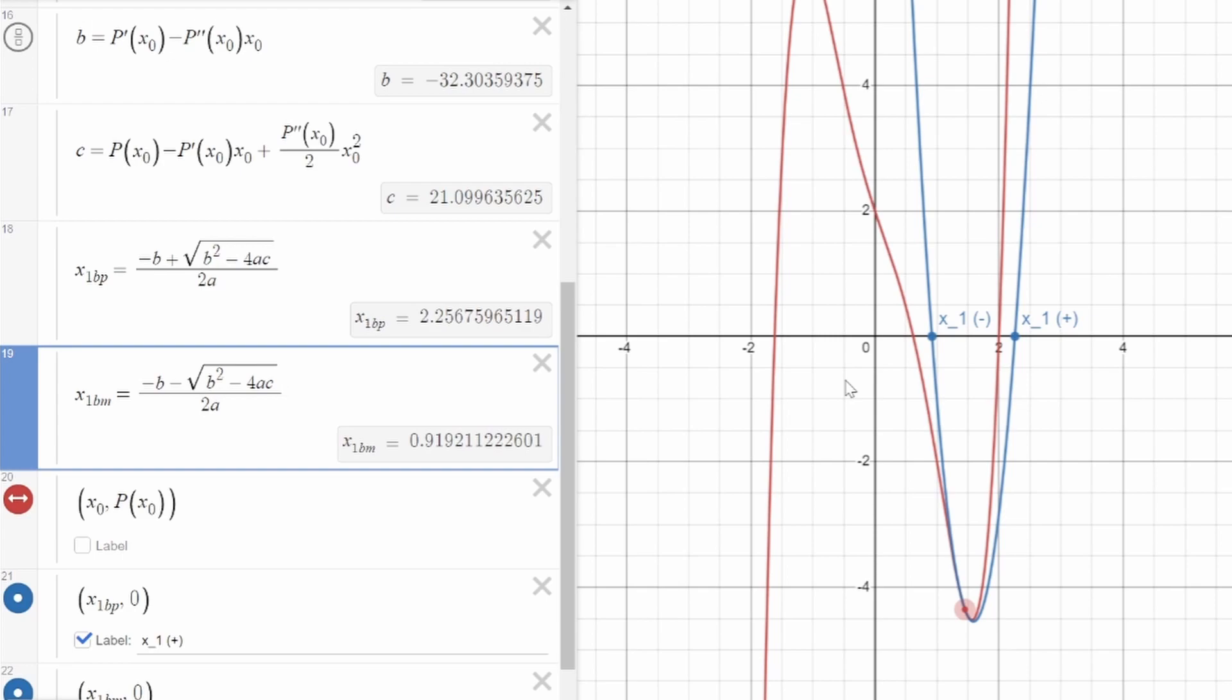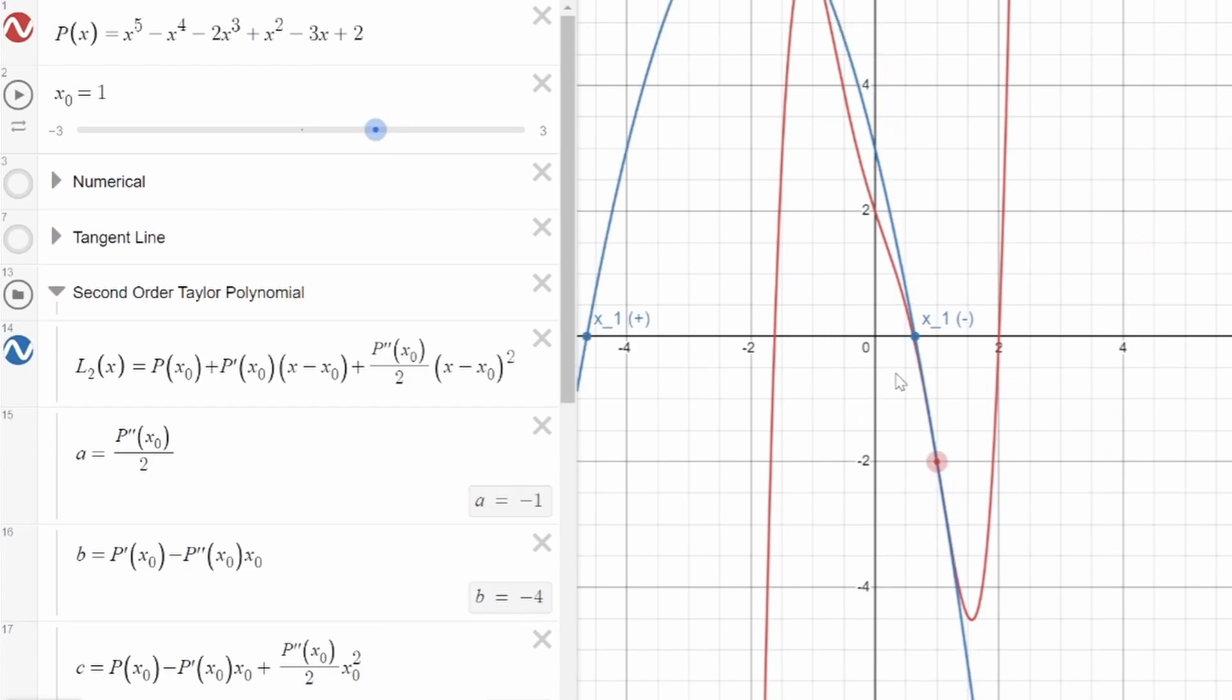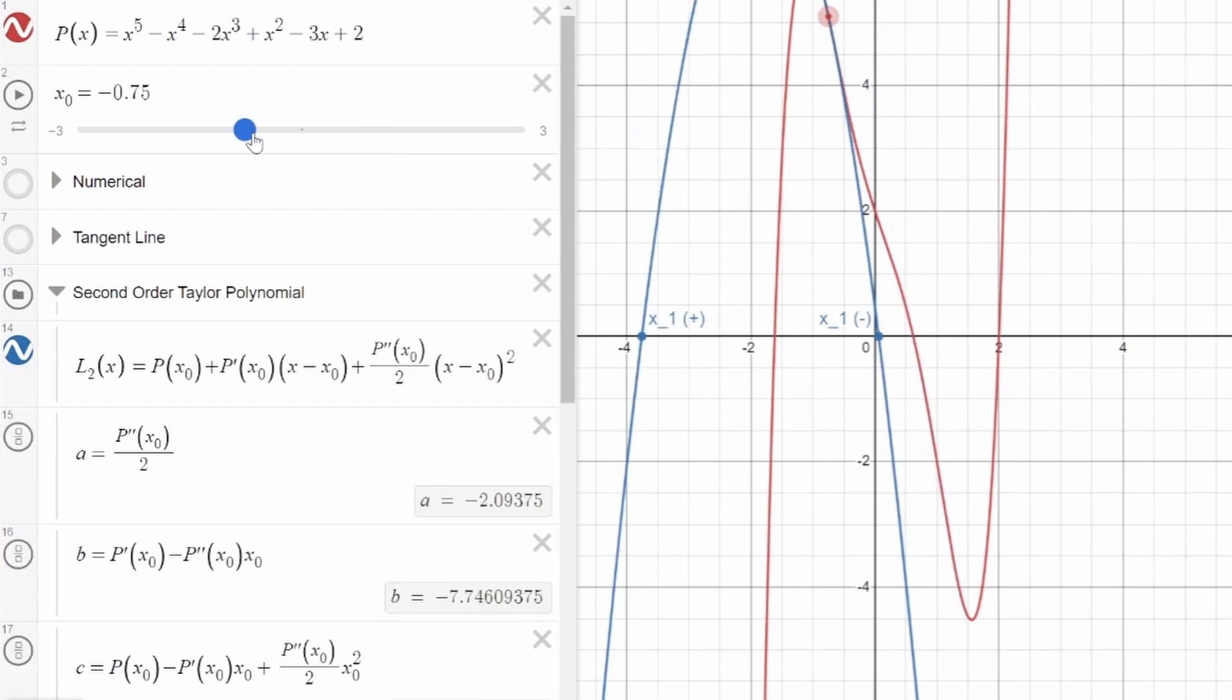In that case, the easiest thing to do would be just to choose the new x value that is closest to your original guess. That's because if your original guess is already very close to one of the roots, the closer root of the quadratic would be the one that you're looking for.